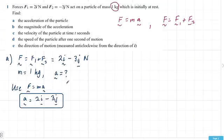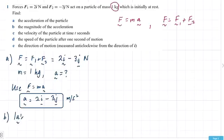You could put units there as well — you would assume meters per second squared. The next part, b, asks: what is the magnitude of the acceleration? The magnitude of the acceleration is just the magnitude of a vector.